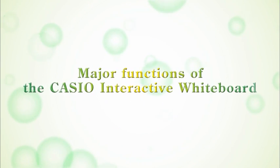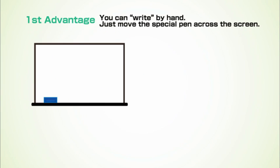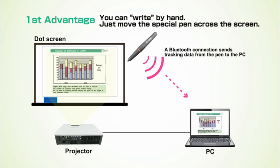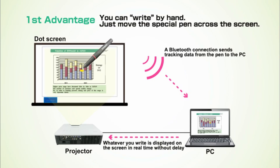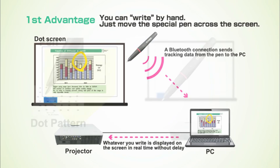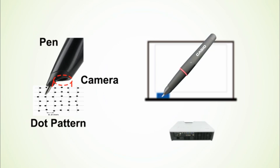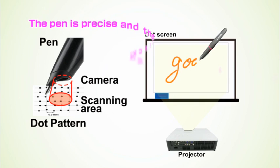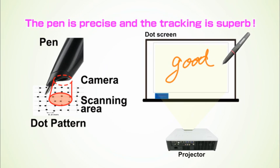The major functions. First advantage. Casio's digital pen and screen allow for easy operation. Everything can be operated using the pen without the help of a PC. The camera inside the pen uses dot pattern recognition to accurately determine its position, allowing smooth tracking.